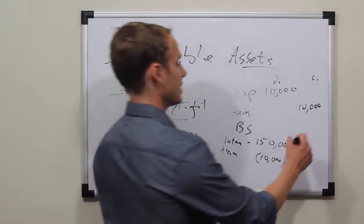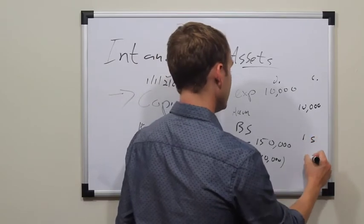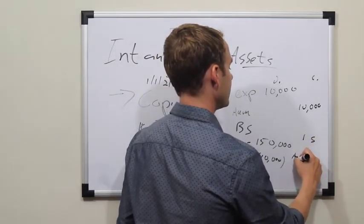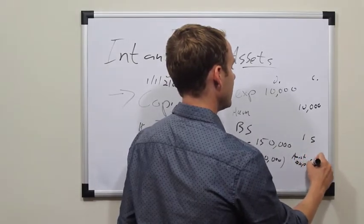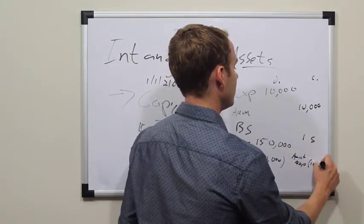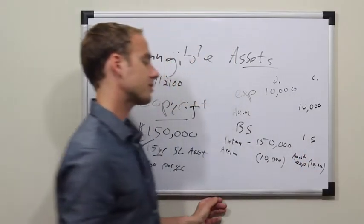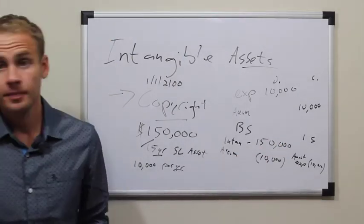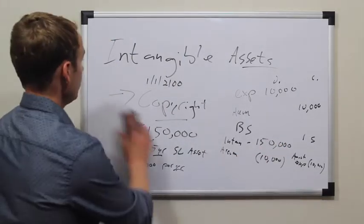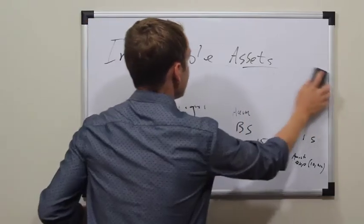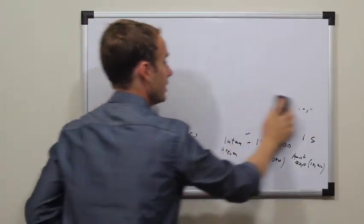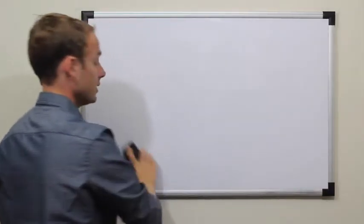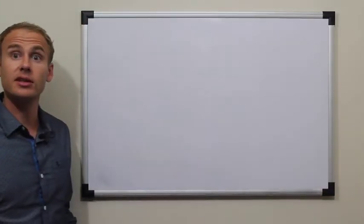The transaction we're talking about on the income statement shows amortization expense of $10,000, which goes into the income statement. In the world of debits and credits, it's going to be a debit to the expense and a credit to accumulated amortization.